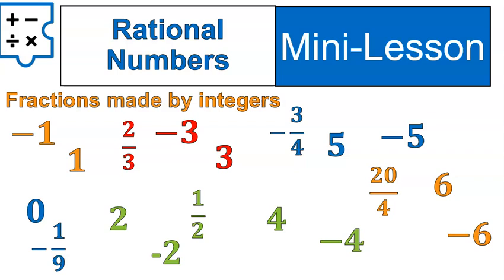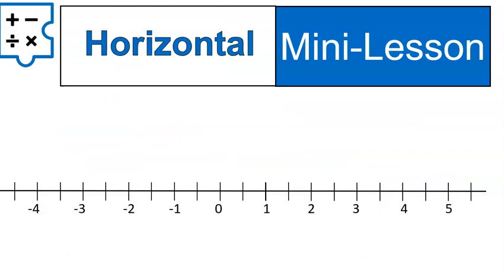So we are going to look at number lines with positive and negative fractions and all other different types of number lines. Because rational numbers can include just regular integers, whole numbers, zero. It can include all of that. So basically we're going to make number lines that include just about everything.